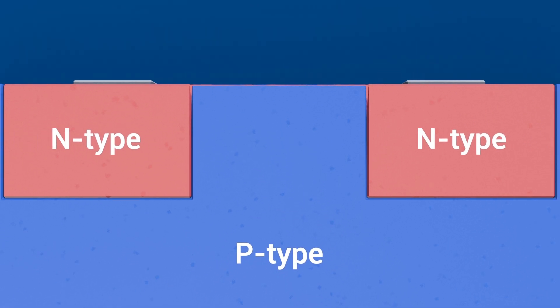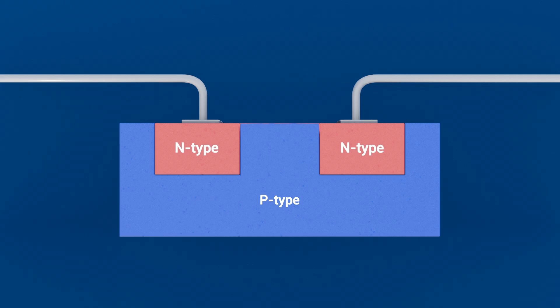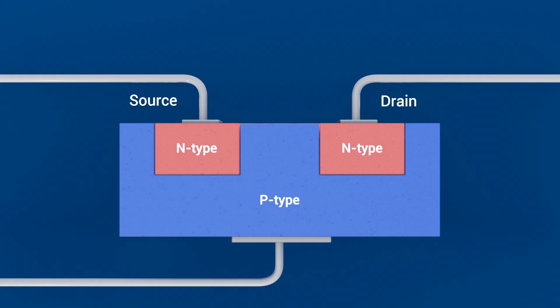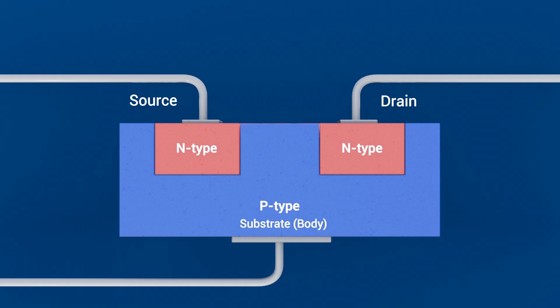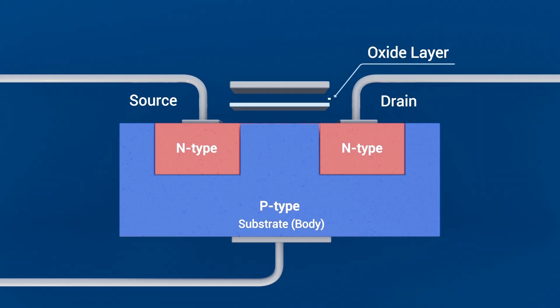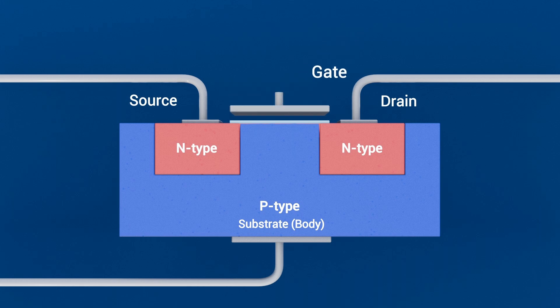Now imagine a P-type region with two smaller N-type regions on either side. We connect two terminals to the N-type regions called source and drain. On the P-type region, we connect another terminal called the substrate, which in most discrete MOSFETs is tied internally to the source, so you can only see three external pins. Between the two N-type regions is an oxide layer, usually a thin layer of silicon dioxide, and above this oxide sits the gate electrode, often polysilicon or metal, bonded out to the gate pin.